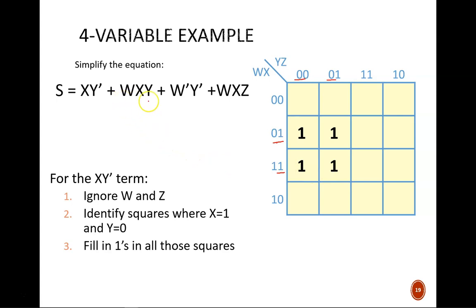For the WXY term, we look for the squares where all three of those variables are true regardless of Z. W and X are both 1 in this row. Y is 1 in these two columns. So these two squares get filled in.